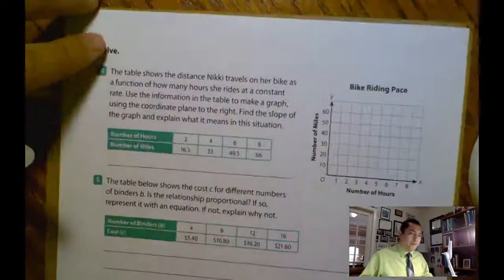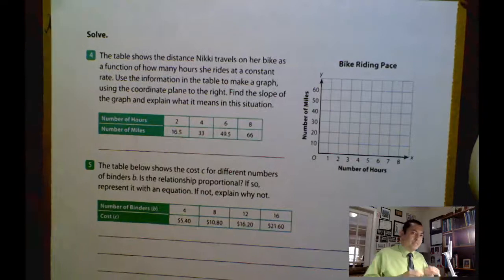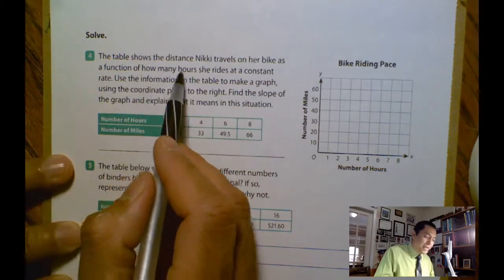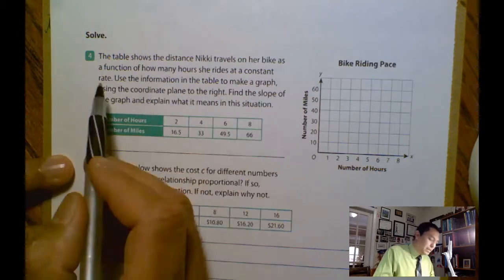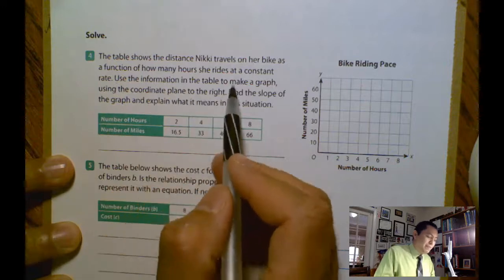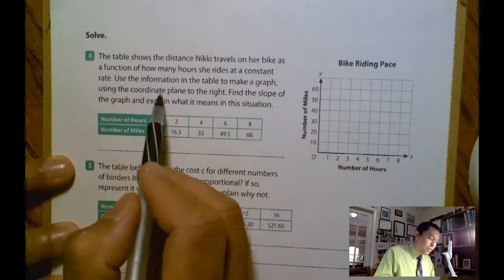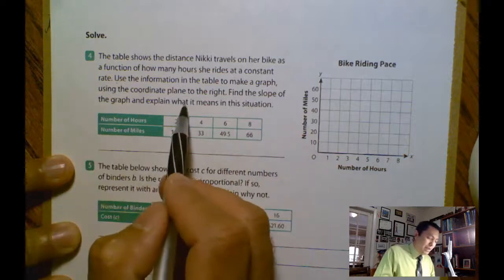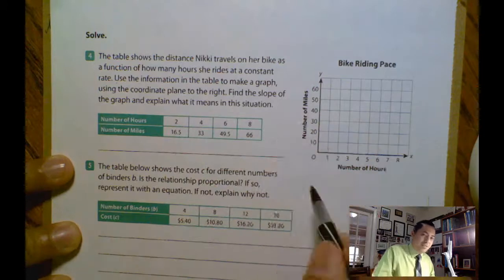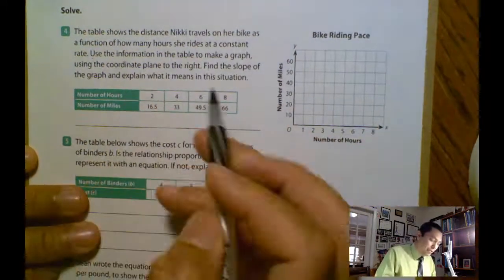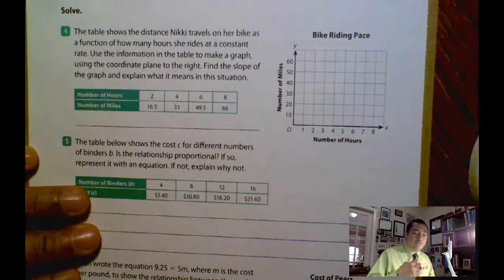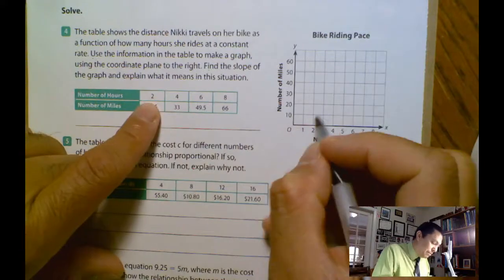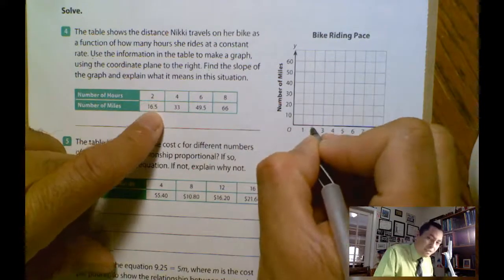Now let's move to problem number 4. The table shows the distance Nikki travels on her bike as a function of how many hours she rides at a constant rate. Use the information in the table to make a graph. Using the coordinate plane to the right, find the slope of the graph and explain what it means in this situation. So I have this grid here. And what you need to do is just graph these points. It's going to be an approximation. It's going to be a linear function.